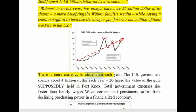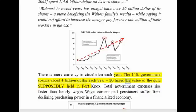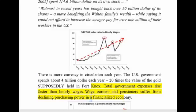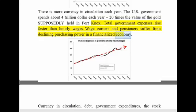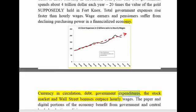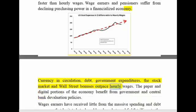There is more currency in circulation each year. The US government spends about $4 trillion each year — 20 times the value of the gold supposedly held in Fort Knox. Total government expenses rise faster than hourly wages. Wage earners and pensioners suffer from declining purchasing power in a financialized economy. Currency in circulation, debt, government expenditures, the stock market, and Wall Street bonuses all outpace hourly wages.